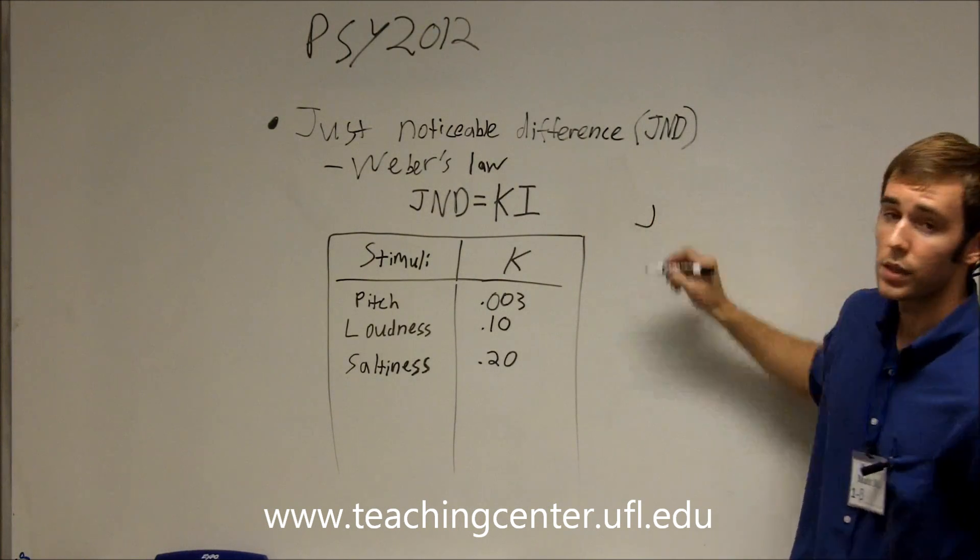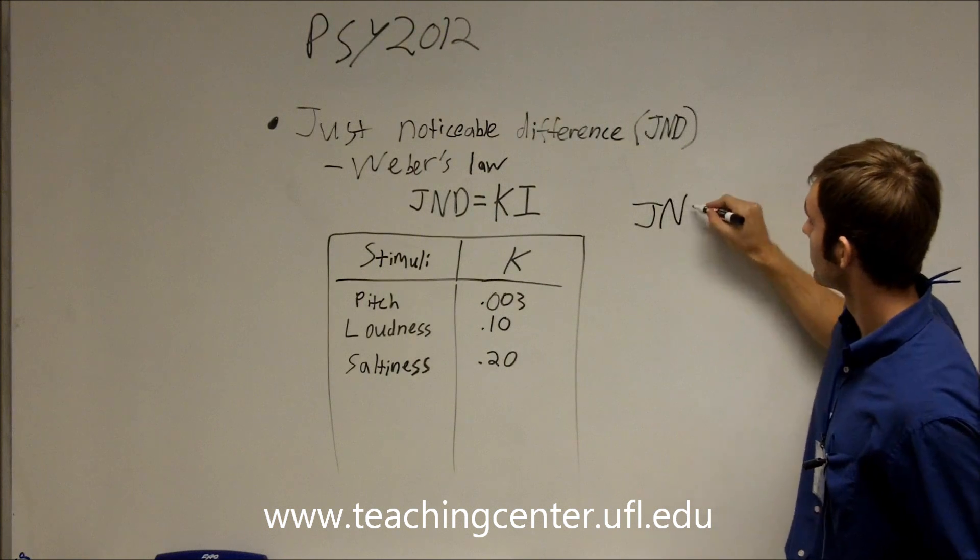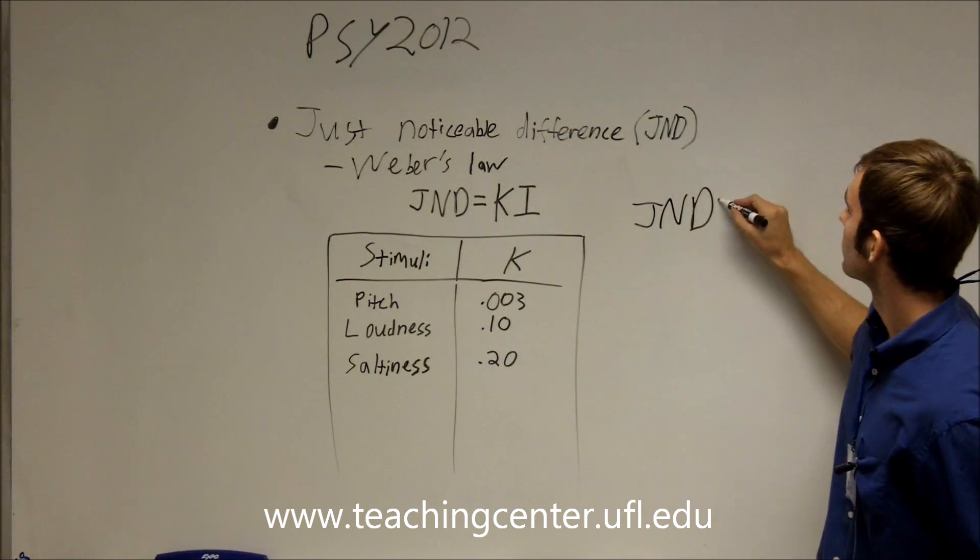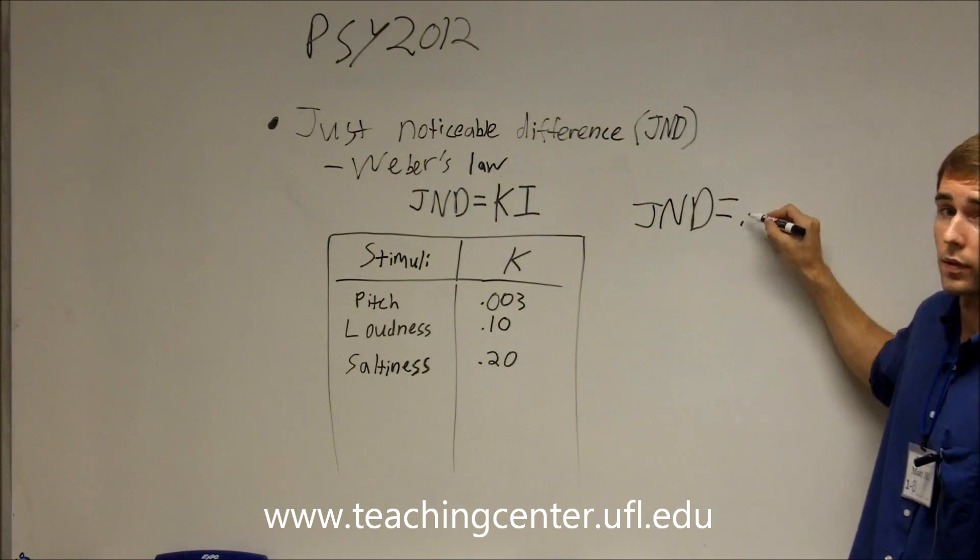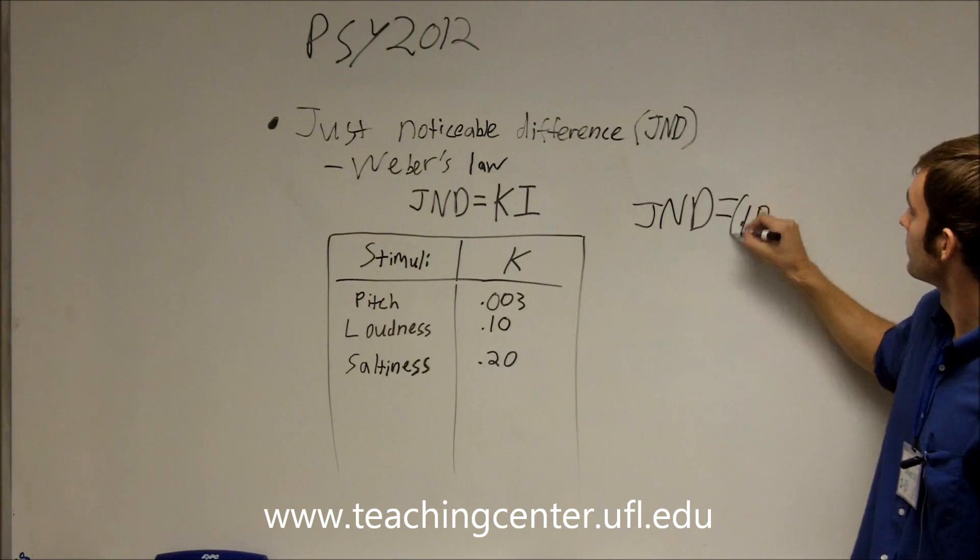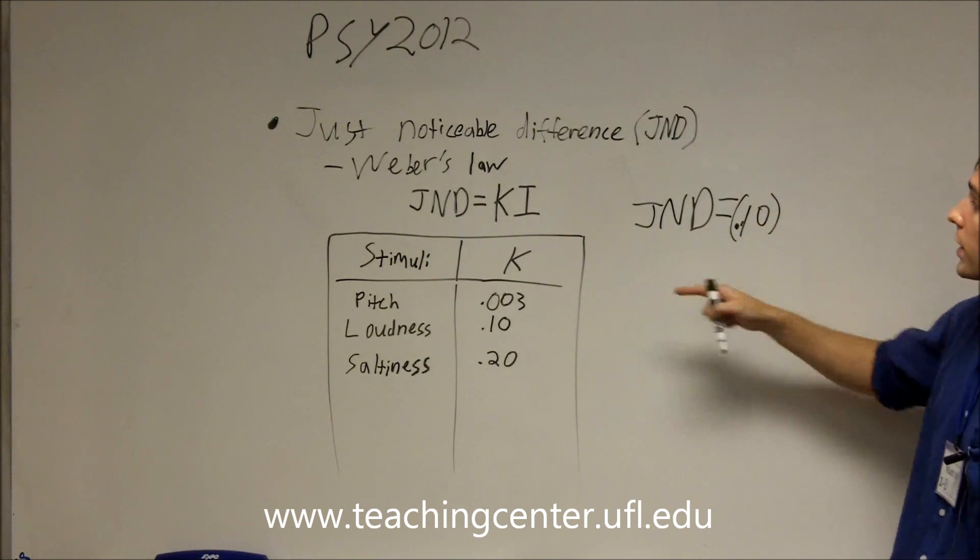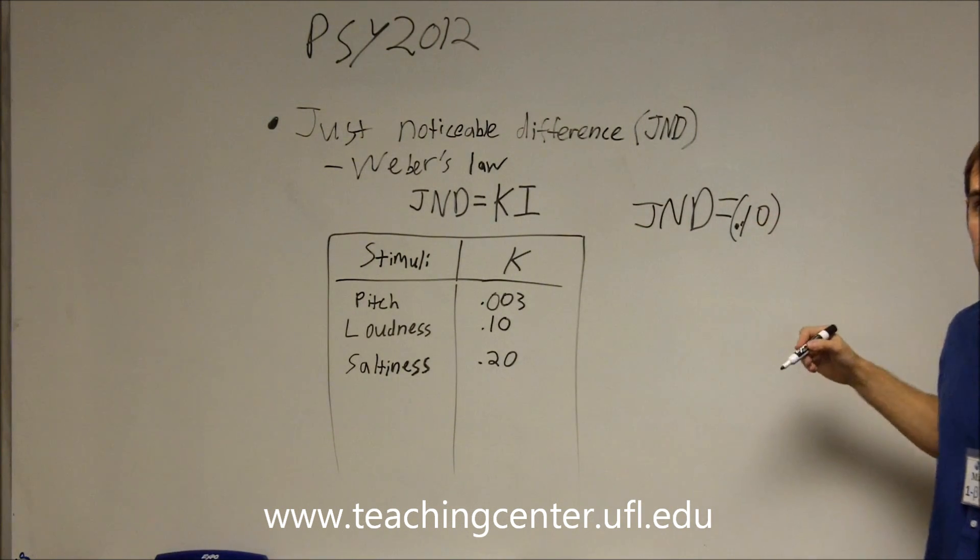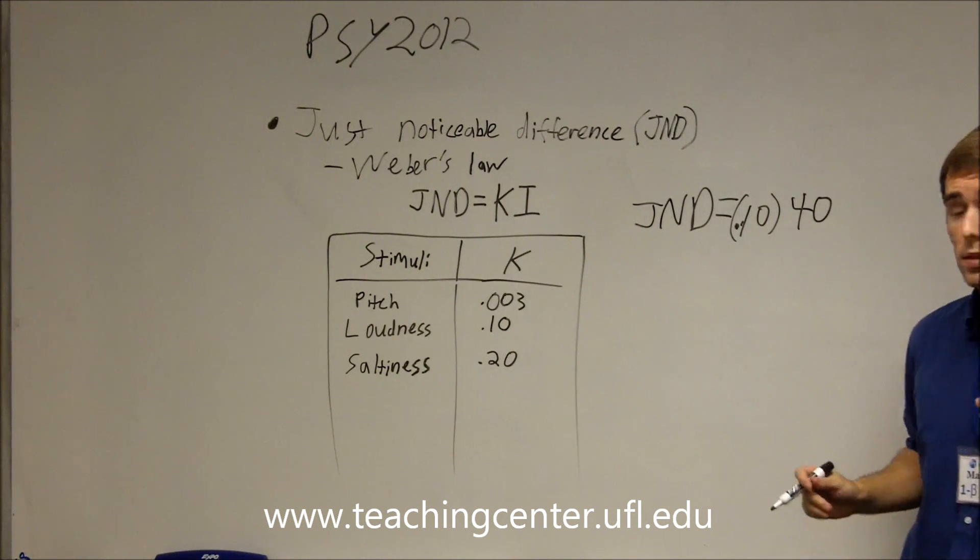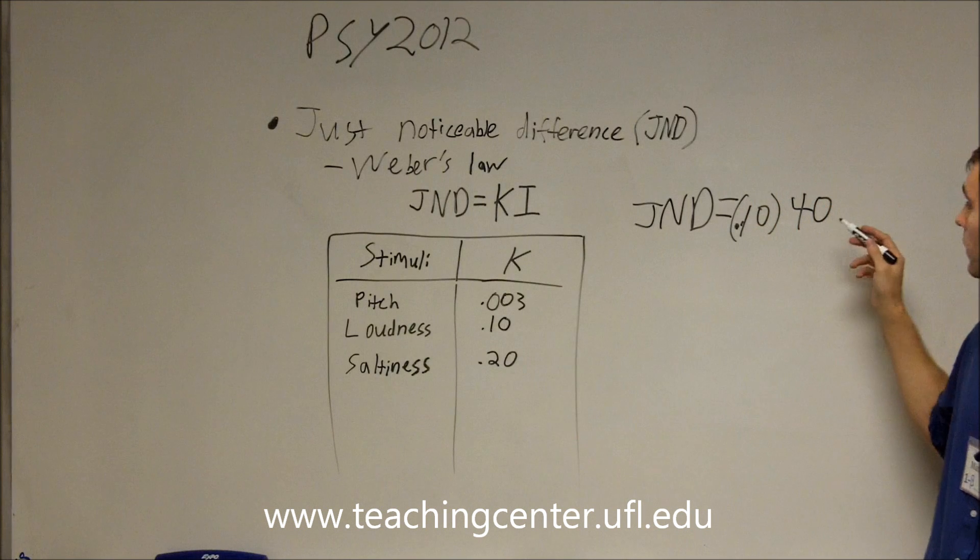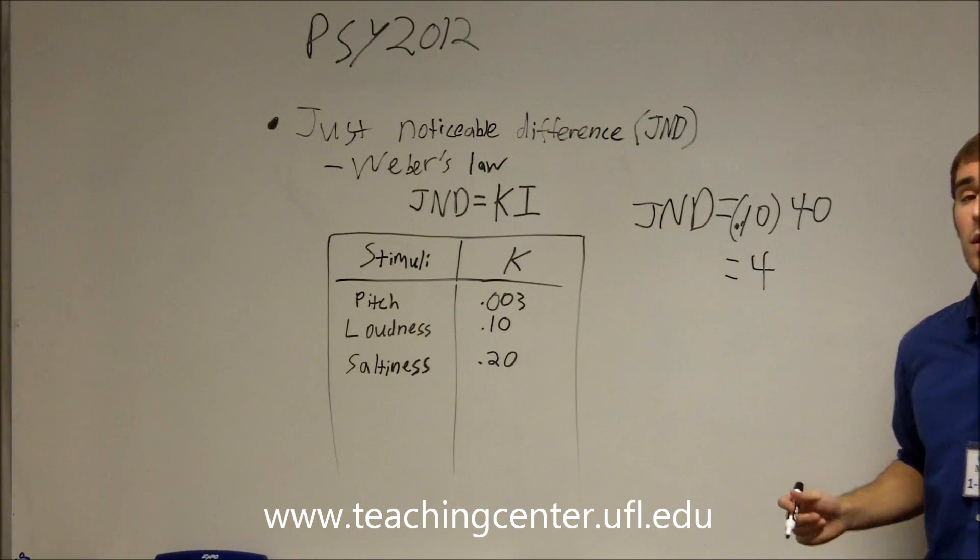Well, let's say we're listening to our TV at a volume of 40. So, this constant, K, .10, times a volume of 40. That's the measure of the intensity of the sound. How loud it is. So, .10 times 40 is 4. We'll have to turn it down by 4.